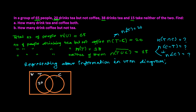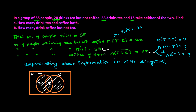The complete number of people taking tea is 38, which covers this entire tea circle. We already have 20 in the tea-only section, so in the intersection region we write 38 minus 20, which equals 18. For the third piece of information — the 15 people taking neither tea nor coffee — we write 15 outside both circles.